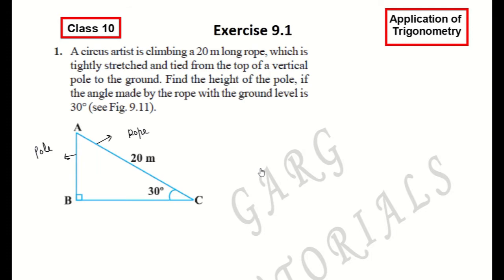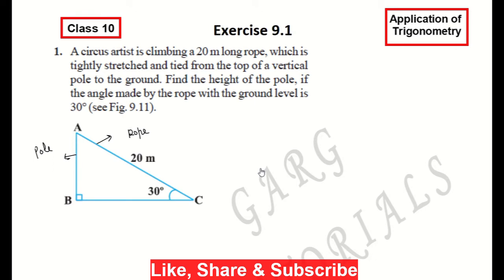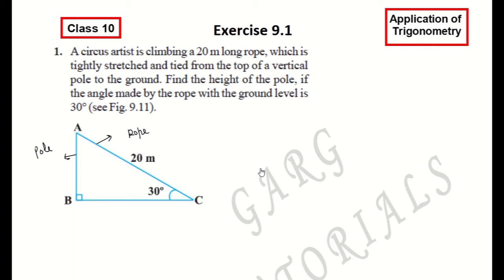To find the application of trigonometry, we need to identify the trigonometric ratios using perpendicular, base, and hypotenuse. The angle at the ground is 30 degrees, the pole meets the ground at 90 degrees. The hypotenuse is the rope, which is 20 meters.